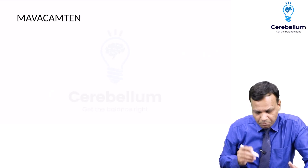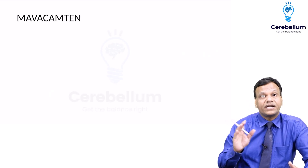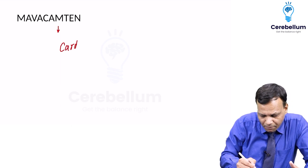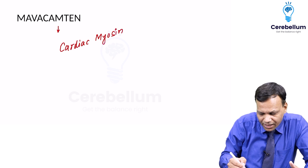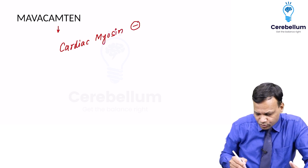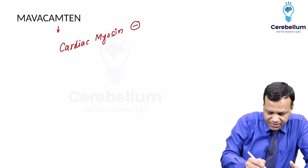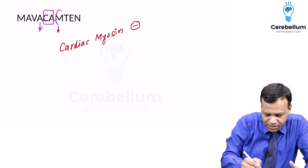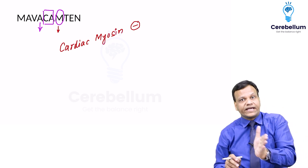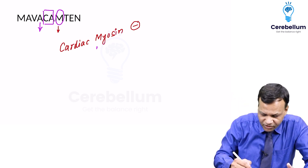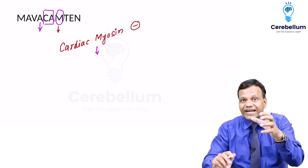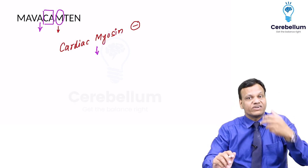The next drug is Mavacemptan. Mavacemptan is a cardiac myosin inhibitor — it is an antagonist of cardiac myosin. When we activate myosin, there is an increase in contractility, so by inhibiting it, Mavacemptan will decrease contractility.